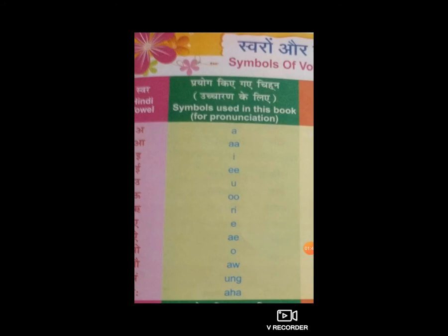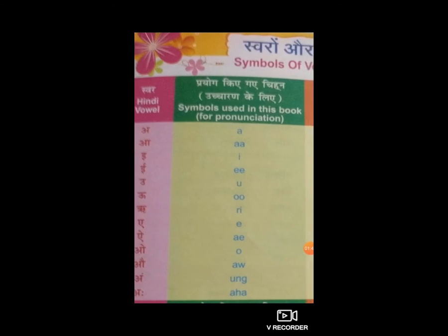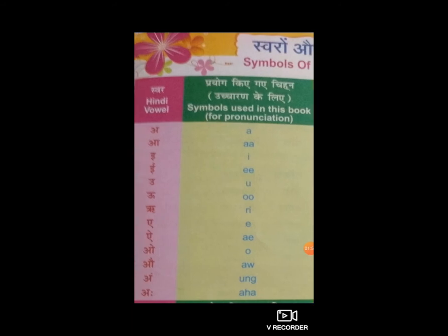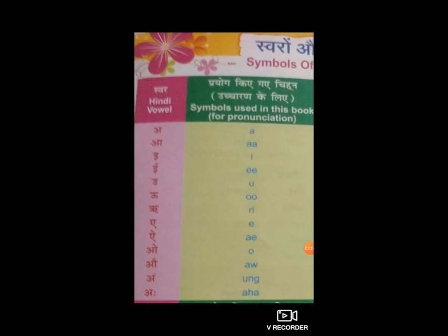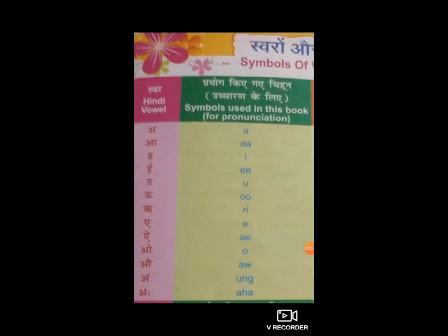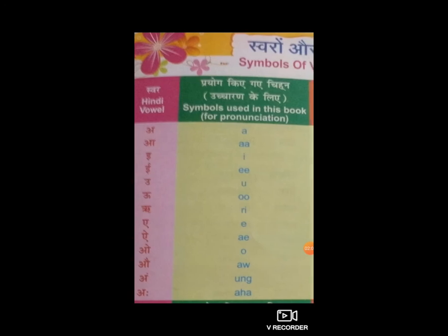फिर होगा 'उ' - यानि की U। उसका उच्चारण होगा U। उ से उल्लू: U, double L, double O। अब होगा बड़ा 'ऊ' - यानि उसका symbol होगा double O। ऊ से उन: double O, N।